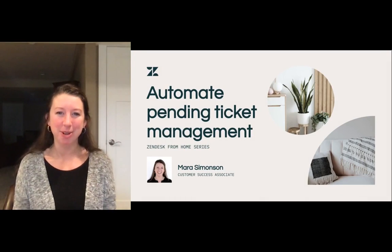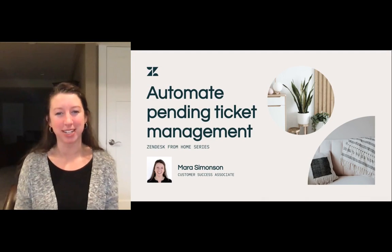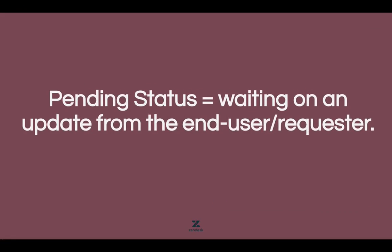Hey everyone! Today we're going to talk about how to automate your pending ticket management. Pending status is used within Zendesk when you're waiting on an update from the end user or requester. An example of this is when the agent reaches out and requests more detail from the end user and moves the ticket into a pending status.